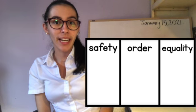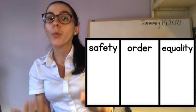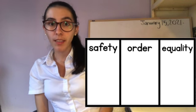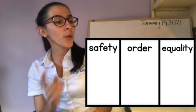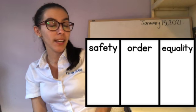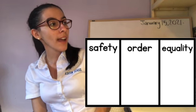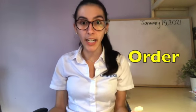On Seesaw, you are going to find this chart, and you can either write on Seesaw or you can copy this chart on a piece of paper or in your social studies or ELA notebook. Notice that it has three categories: safety, order, and equality. You are going to come up with some laws that we have in our classroom that take care of your safety. Then you are also going to come up with some laws that protect order — they keep things organized and in order.